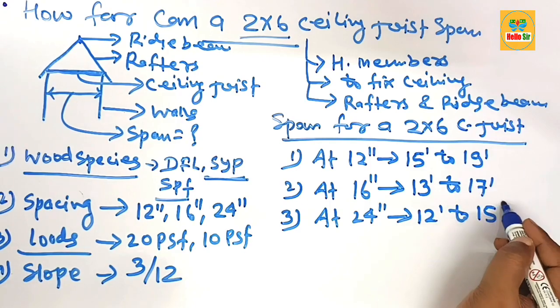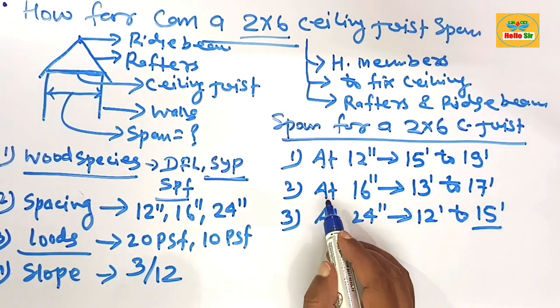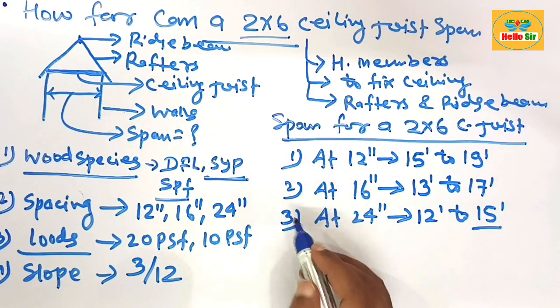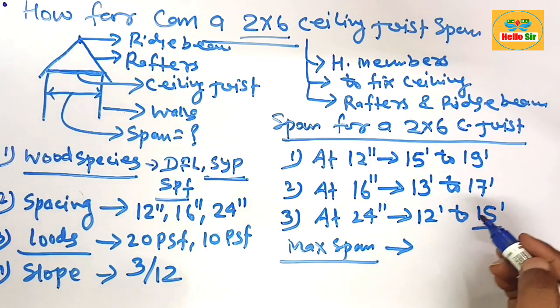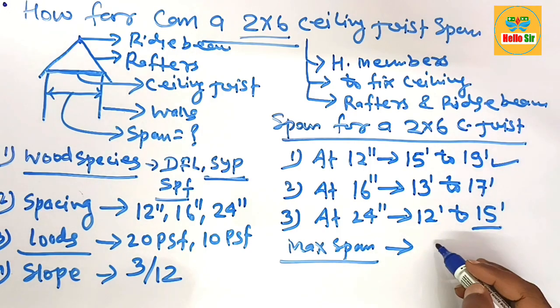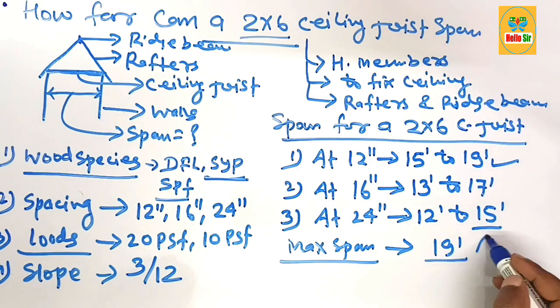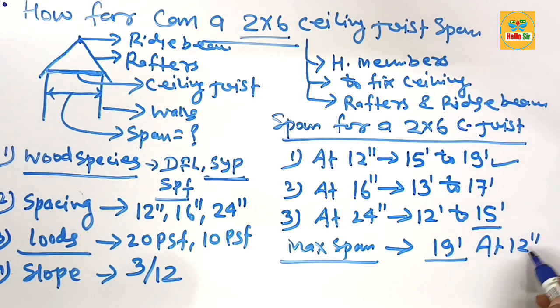If your question asks what is the maximum span, the maximum span for a ceiling joist can span a maximum distance of 19 feet at 12 inches on center spacing. Thank you.